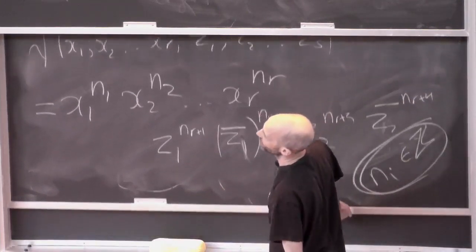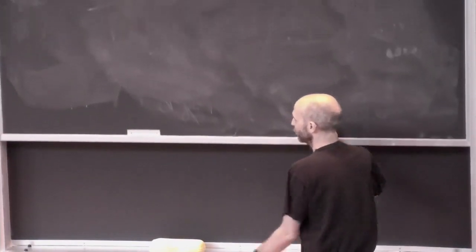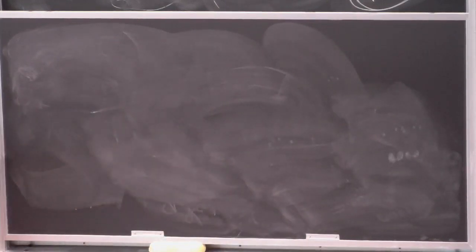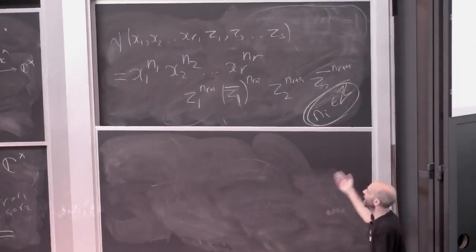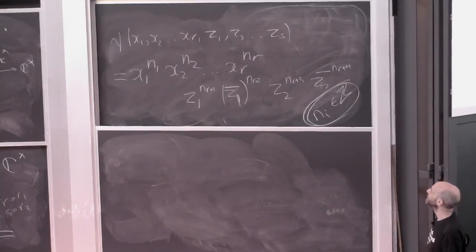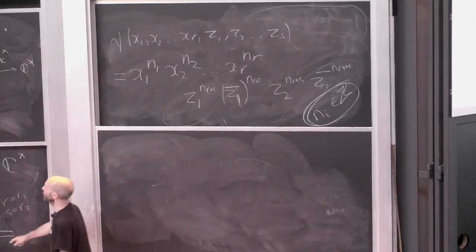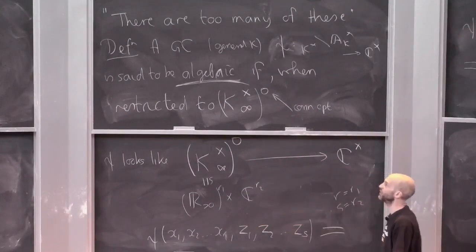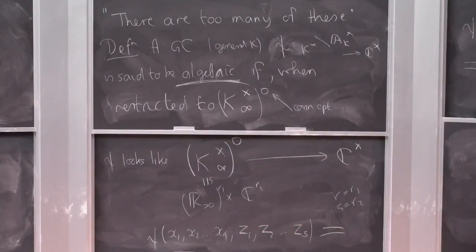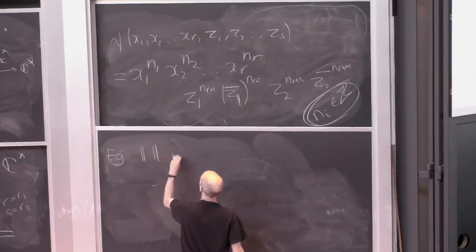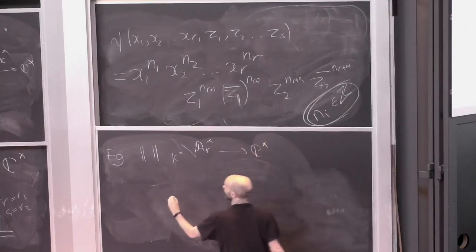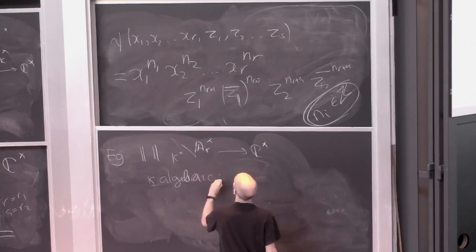That's the formal definition of an algebraic Grössencharacter. There are two things in play: you can't choose those integers randomly because there are equations coming from the units of k, and all those copies of the positive reals — you're not allowed random complex numbers, you must use integers. For example, the cyclotomic norm character from k* to A_k* to C* turns out to be algebraic, and all the n's equal one.